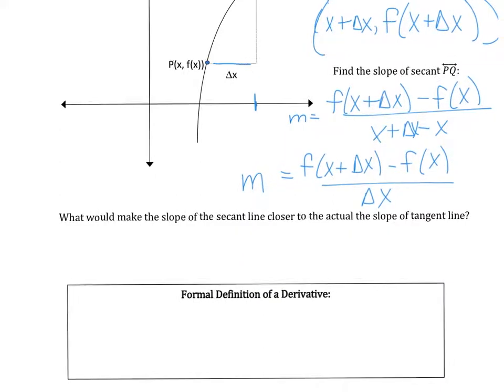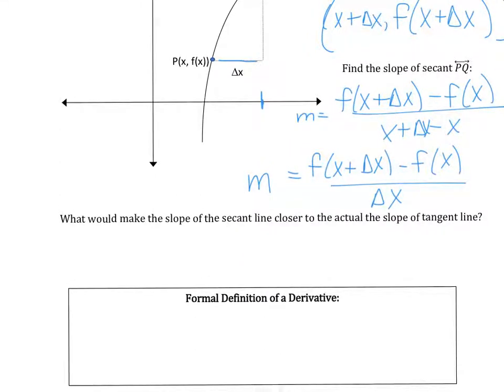And just like the other day, if I ask you again, what would make the slope of the secant line closer to the actual slope of the tangent line? So what would make, again, I'm ultimately trying to find this slope here, what would make that slope of the secant line a better approximation? Just like we did before, we would move point Q closer to point P. Okay, what does that mean? If Q is getting closer to P, what's happening to delta x? Delta x is getting smaller and smaller. So delta x, smaller and smaller.